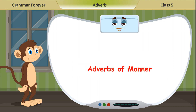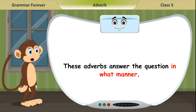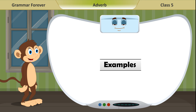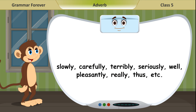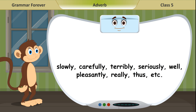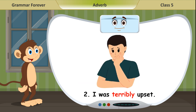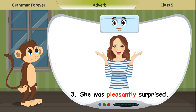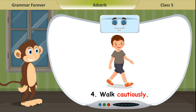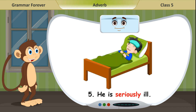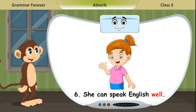Adverbs of Manner: These adverbs answer the question 'in what manner.' Examples include: Slowly, Carefully, Terribly, Seriously, Well, Pleasantly, Really, Thus, etc. Example sentences: 1. The soldiers fought bravely. 2. I was terribly upset. 3. She was pleasantly surprised. 4. Walk cautiously. 5. He is seriously ill. 6. She can speak English well.